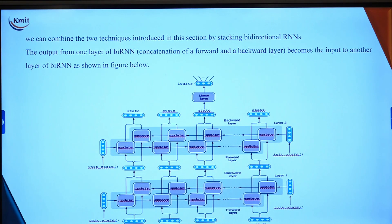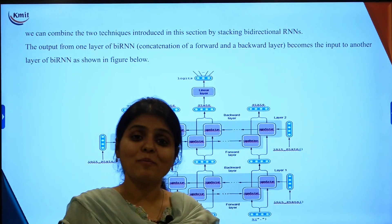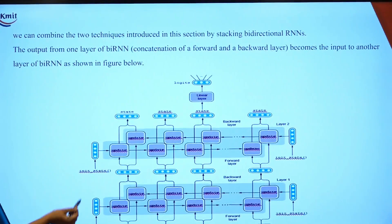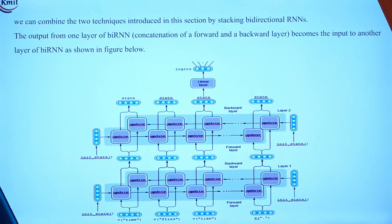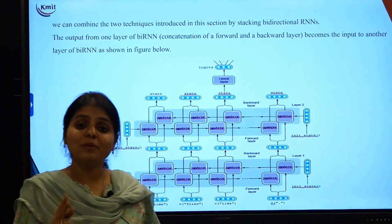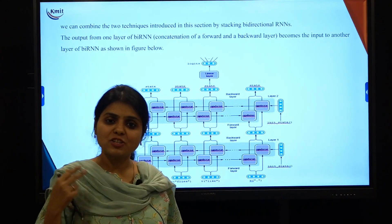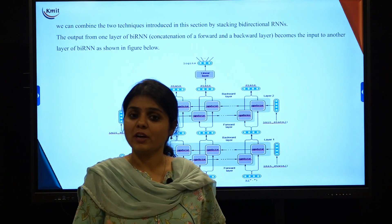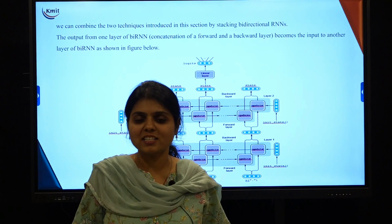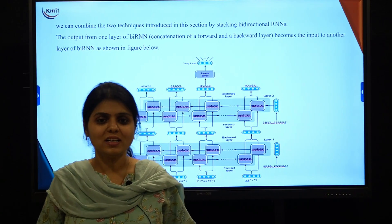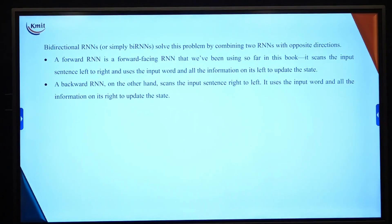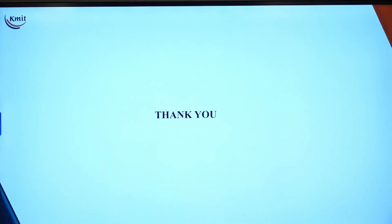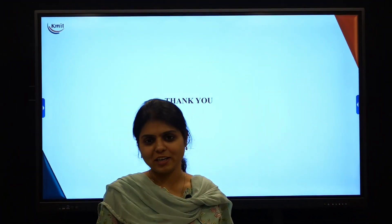We can also combine multi-layer and bi-directional RNNs. As shown in the figure, one bi-directional RNN is stacked upon another bi-directional RNN, forming multi-layered bi-directional recurrent neural networks. Depending on the application and the data we want to process, we use either a simple RNN, a multi-layer RNN with two, three, or more layers stacked on one another, bi-directional RNNs, or a combination of multi-layer bi-directional recurrent neural networks. This covers all the different architectures of RNN — bi-directional and multi-layer. Thank you.